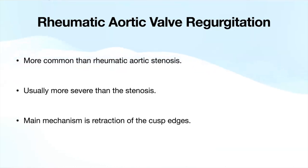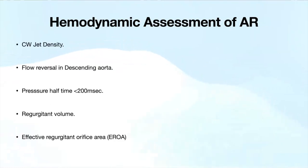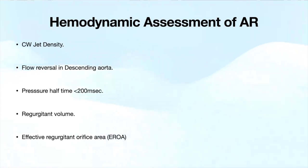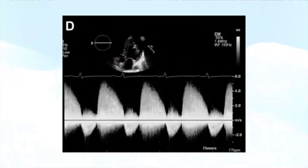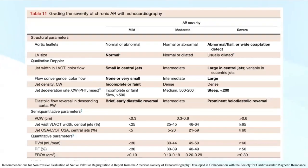Rheumatic aortic valve regurgitation is more common than rheumatic stenosis and is usually more severe than stenosis if they coexist. The main mechanism is retraction of the cusp edges due to calcification and nodularity. Hemodynamic assessment includes CW jet density, flow reversal in the descending aorta, pressure half-time less than 200 milliseconds, and calculation using the PISA method for regurgitant volume and effective regurgitant orifice area. From ASC guidelines: estimated regurgitant orifice more than 30 is severe, regurgitant volume more than 60 is severe, and we look for flow reversals in the abdominal aorta with a pressure half-time less than 200.